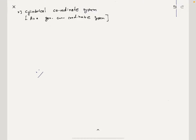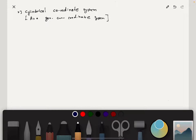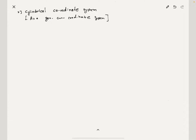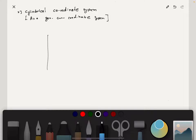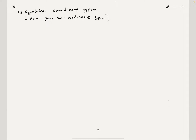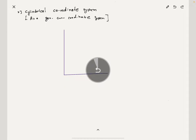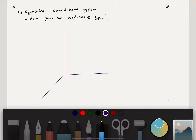The cylindrical coordinate system is a generalized curvilinear coordinate system. This is a three-axis system we are talking about.